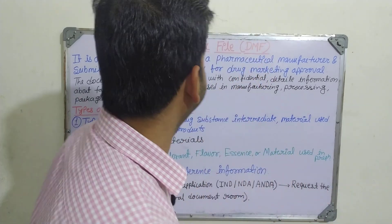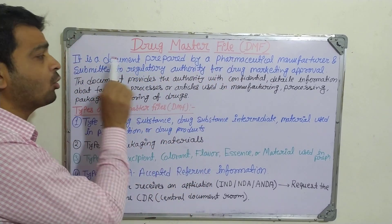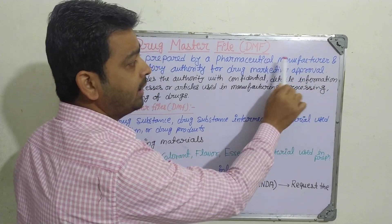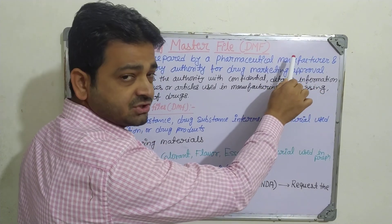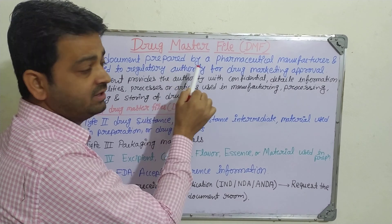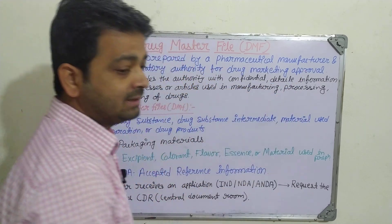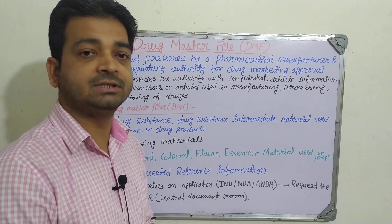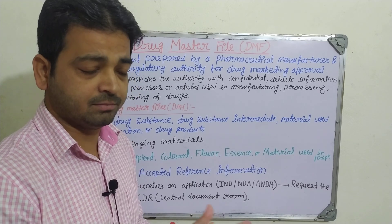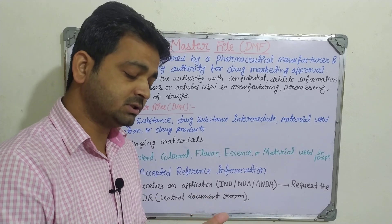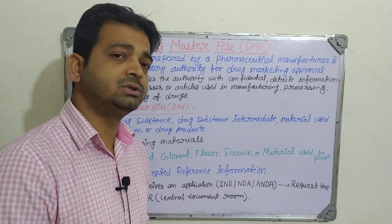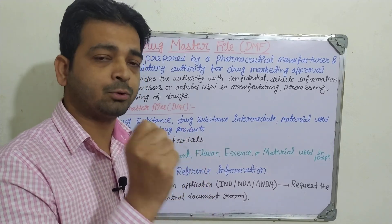The DMF is a document prepared by a pharmaceutical manufacturer and submitted to the regulatory authority like the FDA for drug marketing approval. It is required at the preclinical and clinical stages, and after completion of clinical trials — after Phase 1, Phase 2, and Phase 3 studies — as the drug moves toward marketing approval in Phase 4.